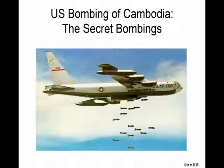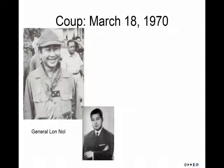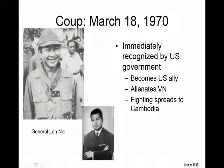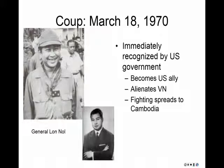In 1970, there was a coup where General Lon Nol overthrew the Prince. You have a right-wing military leader overthrowing the duly elected Prince. This coup is immediately recognized by the United States government, and General Lon Nol becomes an ally of the United States. This obviously alienates the Vietnamese and disrupts the Ho Chi Minh Trail. Some of the fighting of the Vietnam War starts to spread into Cambodia — this is part of the secret war in Cambodia.